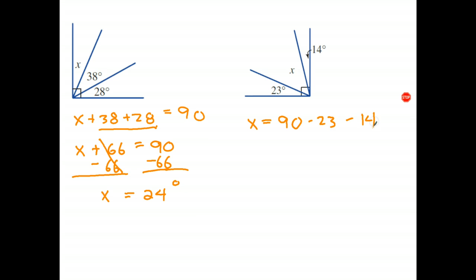Well, 90 take away 23, if I take away 20, I get 70, take away another 3, I get 67. And 67 take away 14, take away 10 is 57, take away 4 is 53. So I think the answer is 53 degrees.